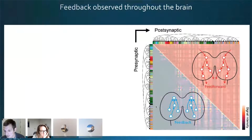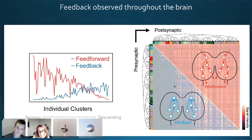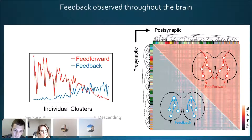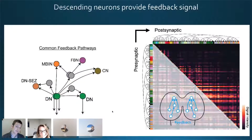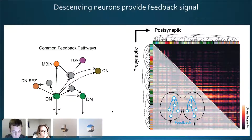Next we looked at feedback paths, represented in the bottom left triangle, and found lots of signal — feedback is a fairly common activity in the brain. Quantifying feedback versus feedforward signal, feedback is robust across many brain clusters but becomes stronger towards the descending neurons. We found that descending neurons themselves emit feedback back to the brain, and specifically this feedback went to dopaminergic neurons in the mushroom body input layer. Since descending neurons are thought to emit behavioral instruction, this suggests they may also emit an efference copy back into the brain, which could be used as a teaching signal for operant learning.